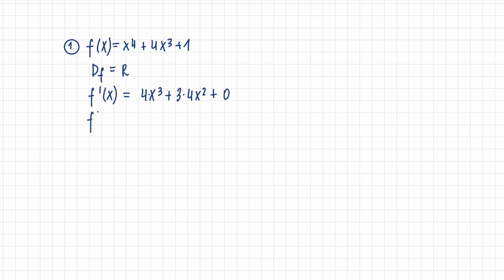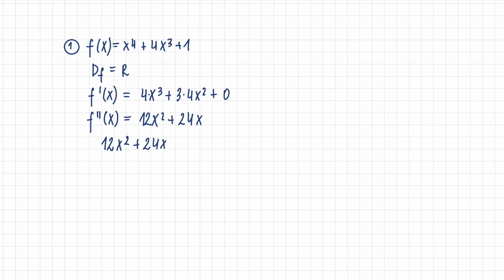Now it's time for us to calculate the second derivative. The derivative of 4x cubed is 12x squared, as we calculated before, and the derivative of 12x squared is 24x. Now it's time to find the inflection points. We know that inflection points occur when the second derivative is equal to 0. So we write down that 12x squared plus 24x is equal to 0. We can factor out 12x, leaving x plus 2 inside the brackets. This means 12x equals 0 and x plus 2 equals 0.